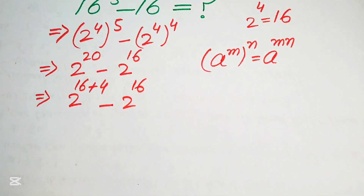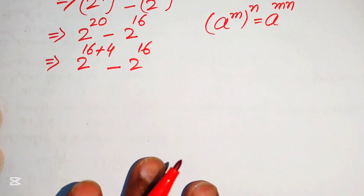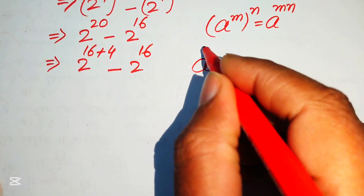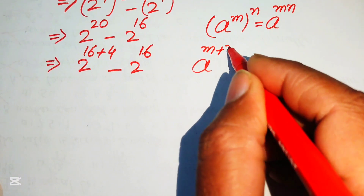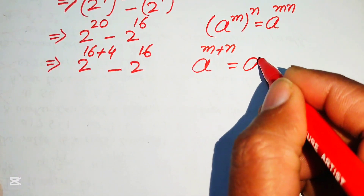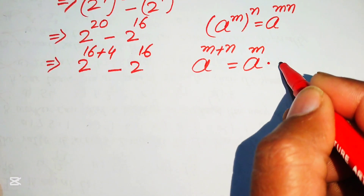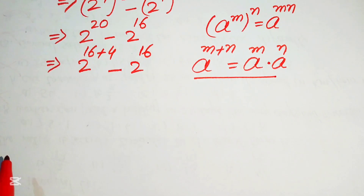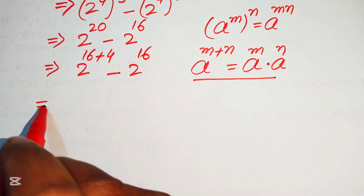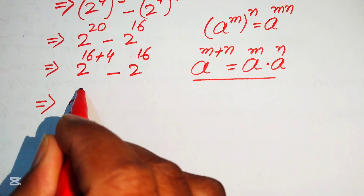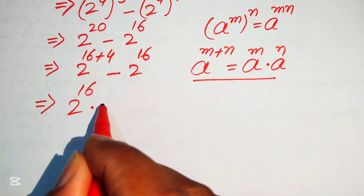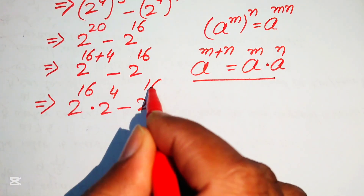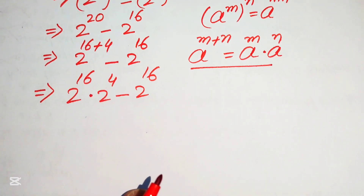We use the rule that a to the power of m plus n equals a to the power of m times a to the power of n. Applying this to the first term gives us 2 to the power of 16 times 2 to the power of 4, minus 2 to the power of 16.